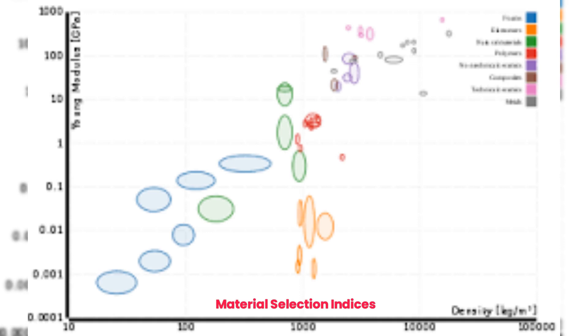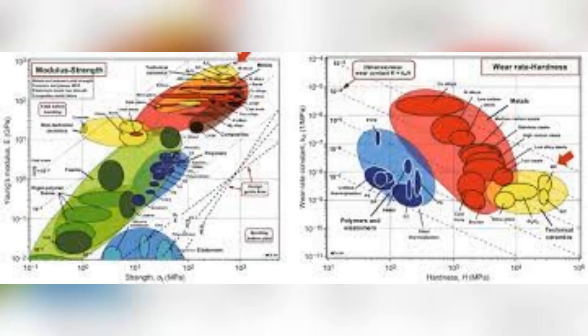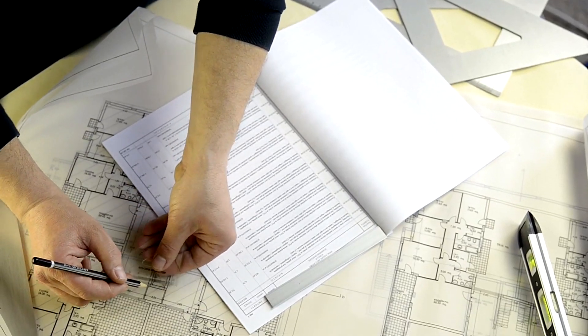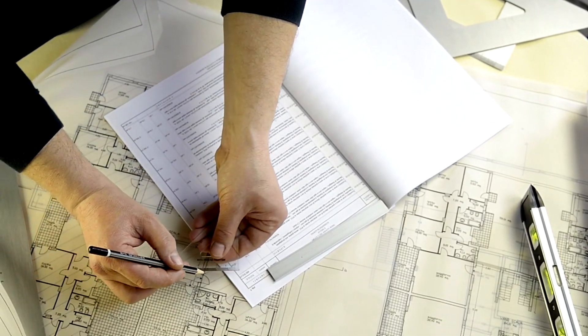Material selection indices: calculate material selection indices, such as the Ashby plot, to help visualize and compare materials based on multiple properties simultaneously. These tools can aid in narrowing down material choices.